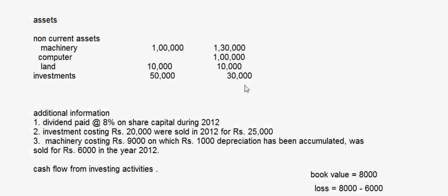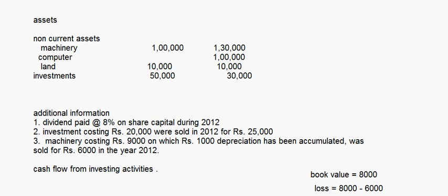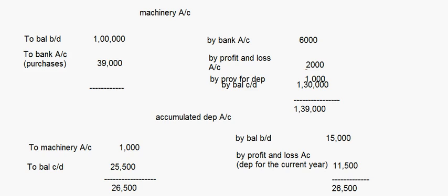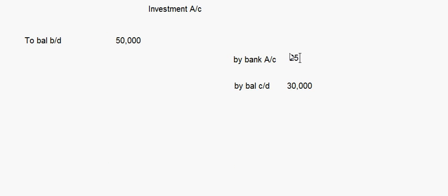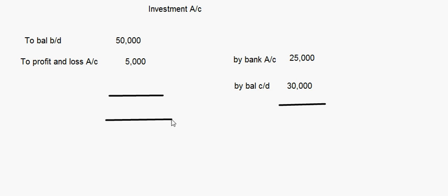Now the investment account: balance carried down is 30,000. Sale of investment — by bank account 25,000 (investment costing 20,000 sold for 25,000). Profit to profit and loss account is 5,000. Both sides tally at 55,000, so there is no balancing figure here — only the sale will come for investments.